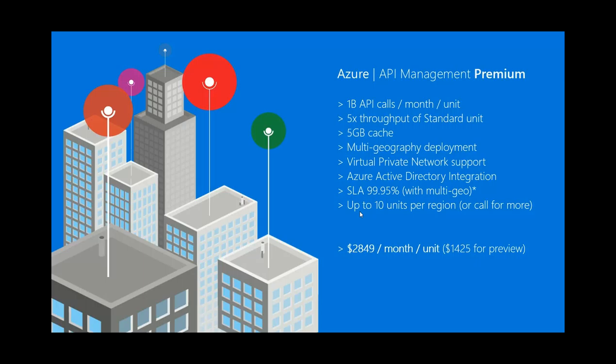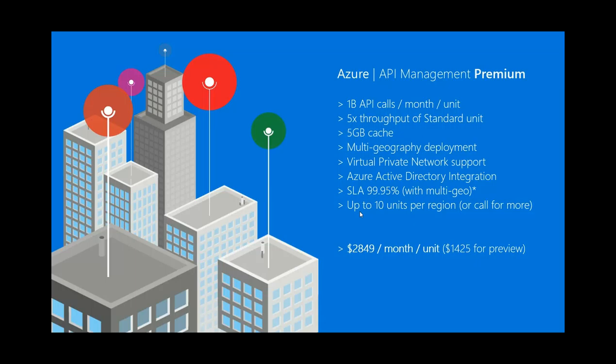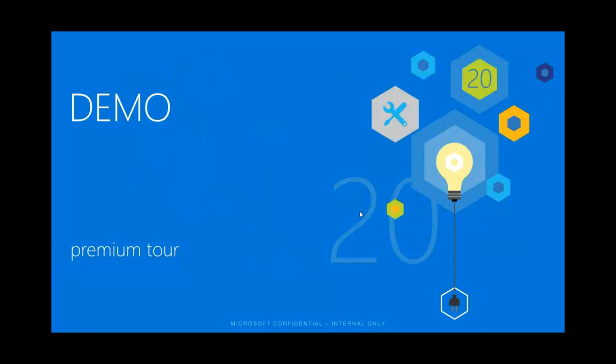Another feature in the premium tier is virtual private network support — you can now connect those proxies to your VPN. The price during preview is $1,425 per month per premium instance, and post-preview I expect it to be around $2,849 per month. As explained, this is extremely competitive in this market. A fantastic and exciting announcement for us with the premium tier, and we're already seeing strong customer interest.